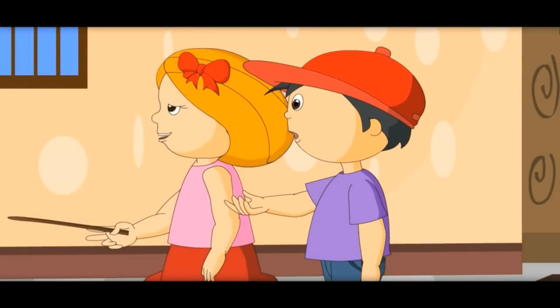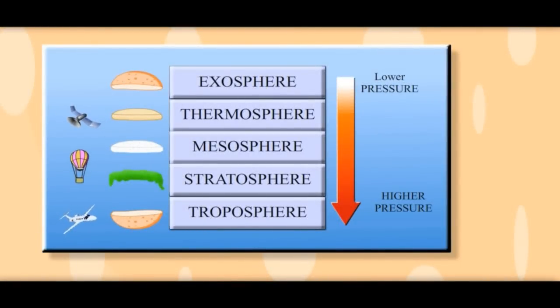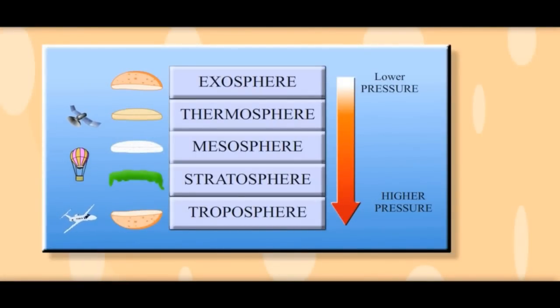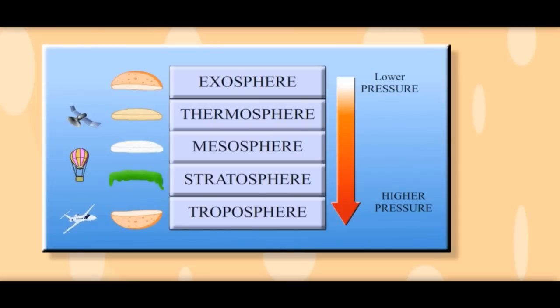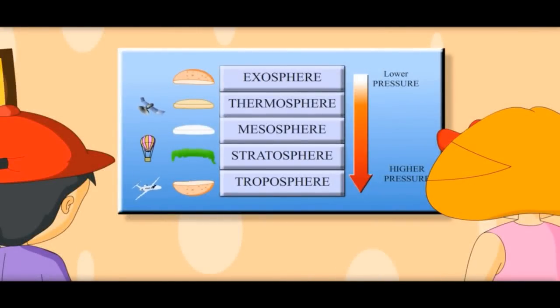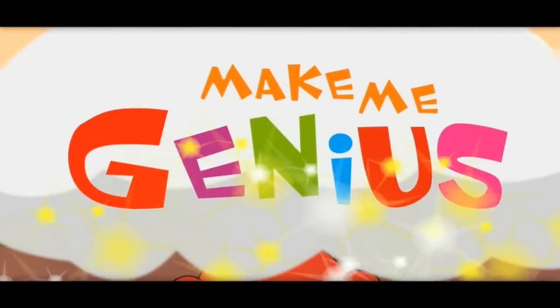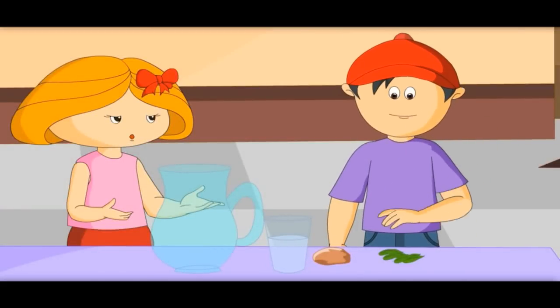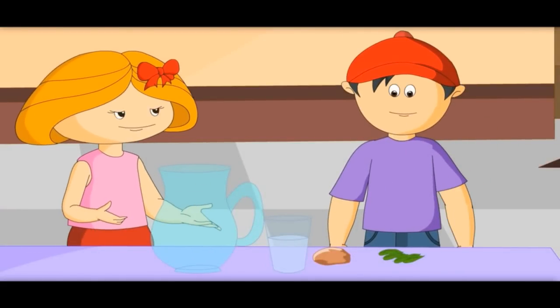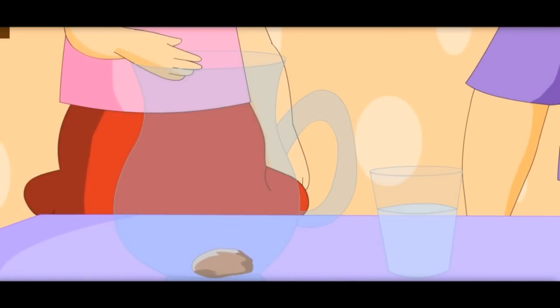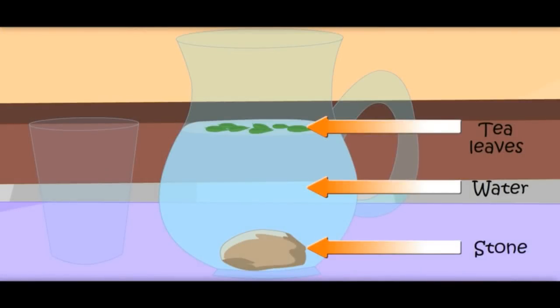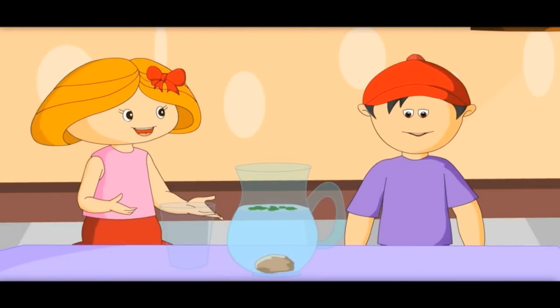Air is heaviest at the bottom layer and thinnest at the top layer. Air pressure is high at the bottom layer and very low at the highest layer. Air molecules are close to each other at the bottom layer and very far apart in the upper layer. That is why air is lighter at the top and heavier at the bottom. Heavier things settle down — stone settles down as it is the heaviest. Now you know why heavy air settles in the bottom layer and light air goes up.